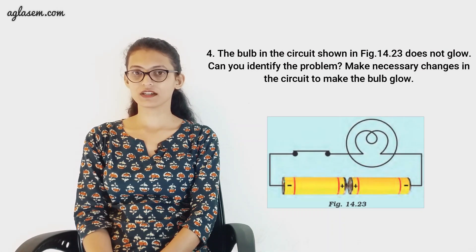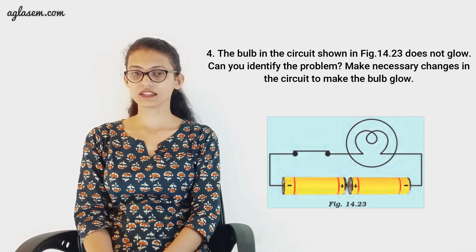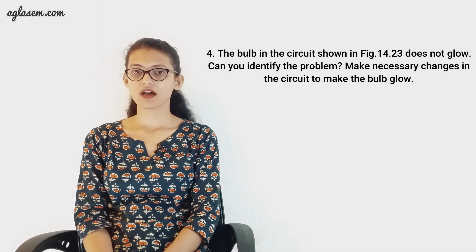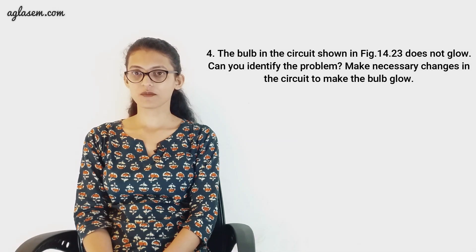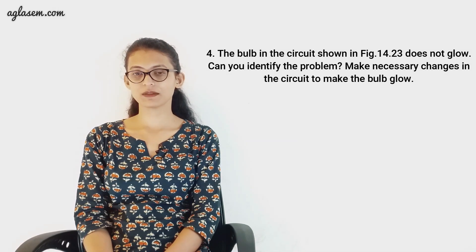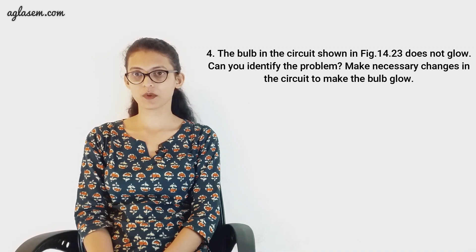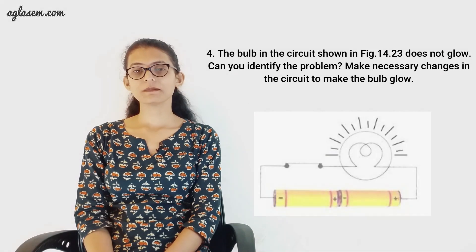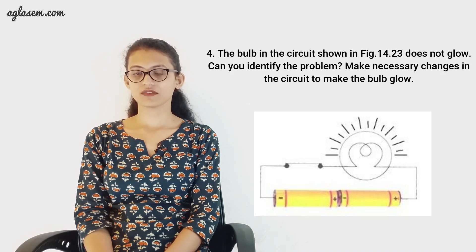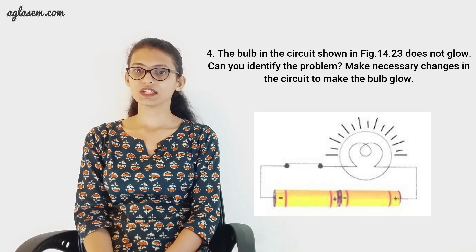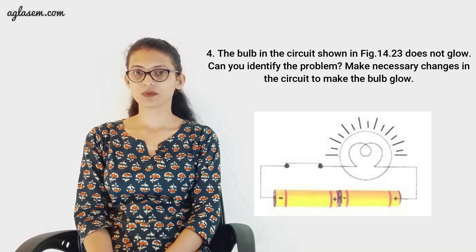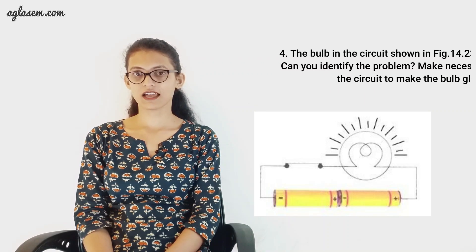Question number four: the bulb in the circuit shown in the figure does not glow. Can you identify the problem? Make necessary changes in the circuit to make the bulb glow. On careful study of the diagram, we can see that both cells of the battery are connected to the same terminal — positive to positive — which is wrong. The bulb will glow when the negative terminal of one cell is connected to the positive terminal of the other. So we need to change the position of the cells as shown in the diagram.